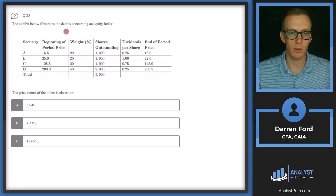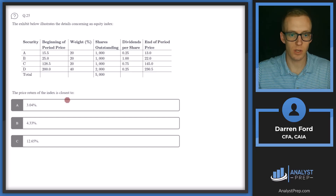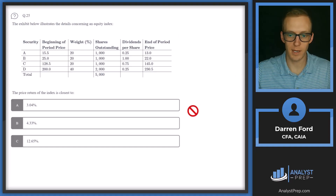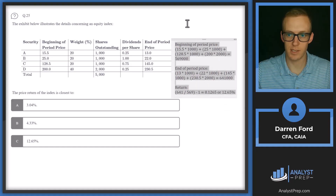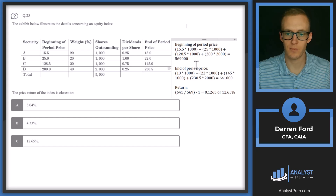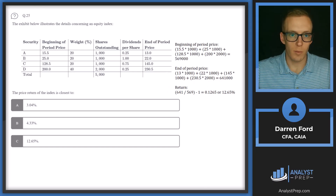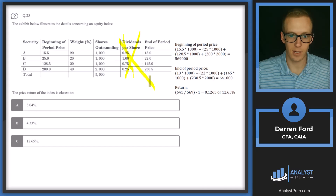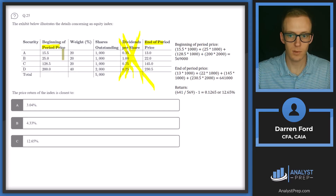Question 25: The exhibit below illustrates details concerning an equity index. The price return of the index is closest to — options are a little over 3%, a little over 4%, or over 12%. For price return, we need to find the beginning-of-period price and end-of-period price. We ignore dividends here — those are included for total return, but price return uses only beginning and end prices.